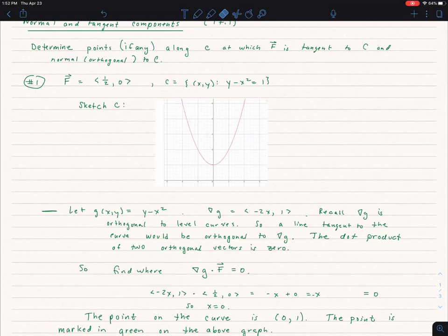So if a line is tangent to the curve and that's what I'm first asked to find, find out whether or not F is tangent to C. Well if F is tangent to C that means it's going to be orthogonal to the gradient of G. So I find the gradient of G, I dot it with F, and if that's zero then they are in fact orthogonal.